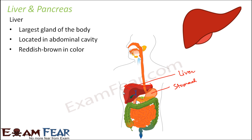The liver is generally reddish brown in color. If you weigh it in an adult human being, it weighs somewhere around 1.5 kg. It is made up of soft tissues and is generally rubbery to touch. However, from outside you cannot feel the presence of the liver, because it is well protected by the rib cage. The rib cage is quite hard and tough, so you don't really get to know what is there inside.